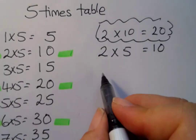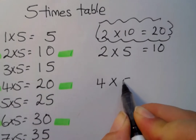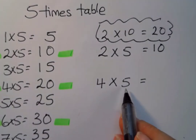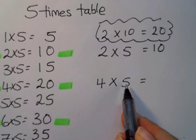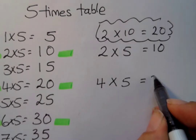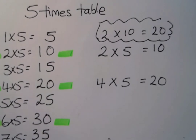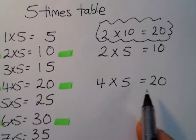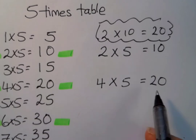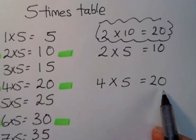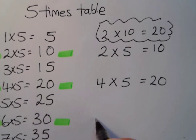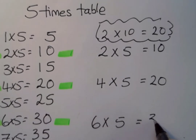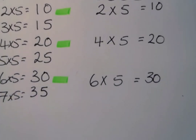So two times five is ten. What about four times five? We can think of it as four times ten and then take half — that's twenty. Or think: what's half of four? Half of four is two, and because it's an even number in the five times table it ends in zero, so four times five is twenty.